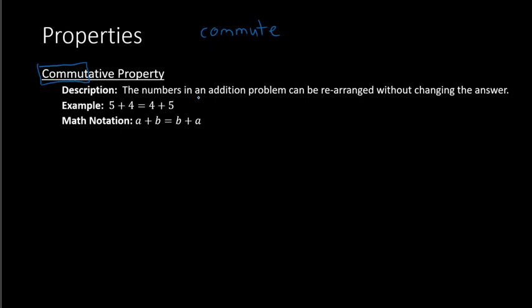Commute has the idea of moving or traveling. So in this context, what is moving or traveling would be the numbers. If we move the numbers around, it does not change the final answer. We have 5 plus 4, but if we move the numbers around — the 5 goes over here and the 4 goes in the front — notice the numbers are moving. So that is the commutative property: when you're moving the numbers around, it does not change the final answer.